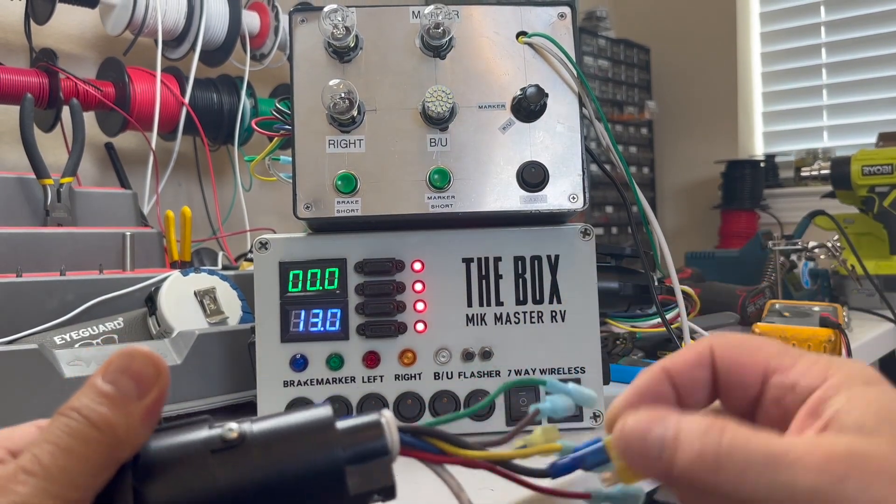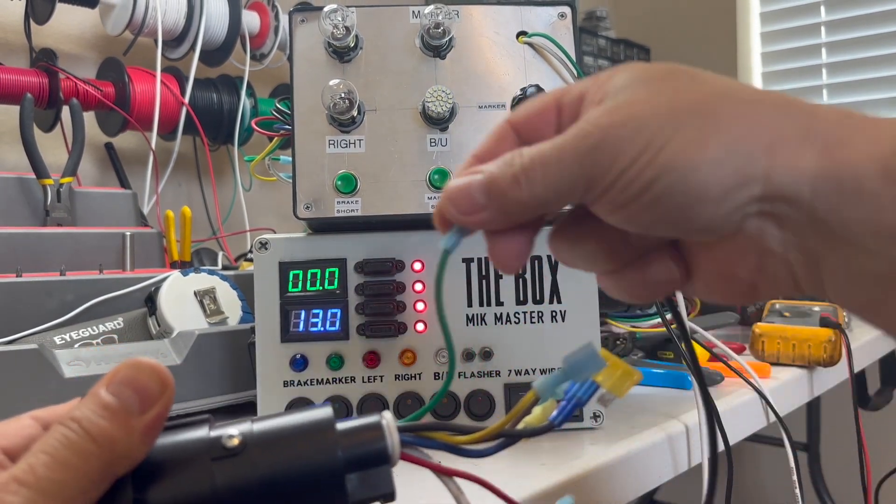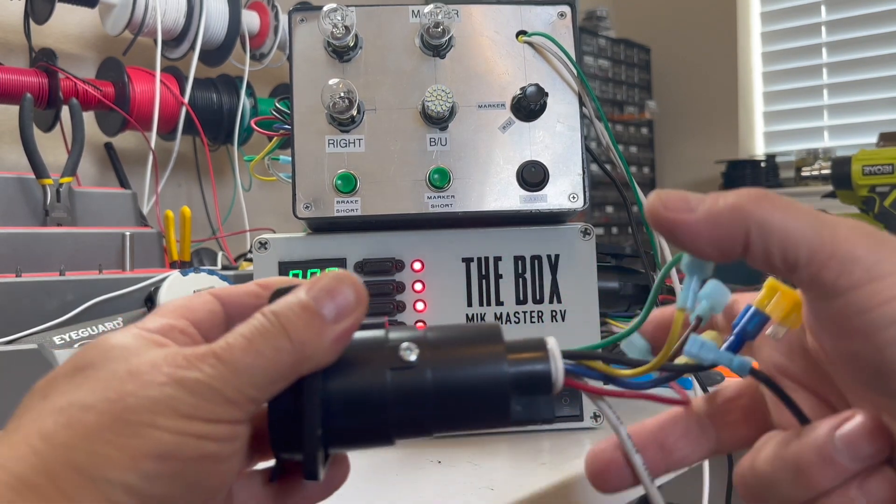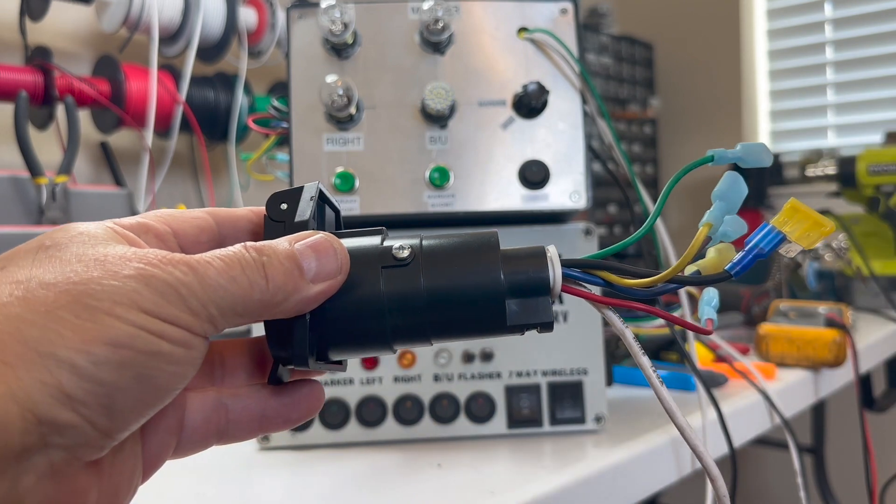You can just hook your hot wire to which light you're trying to turn on, make sure the negative's hooked up. That's all you really need.